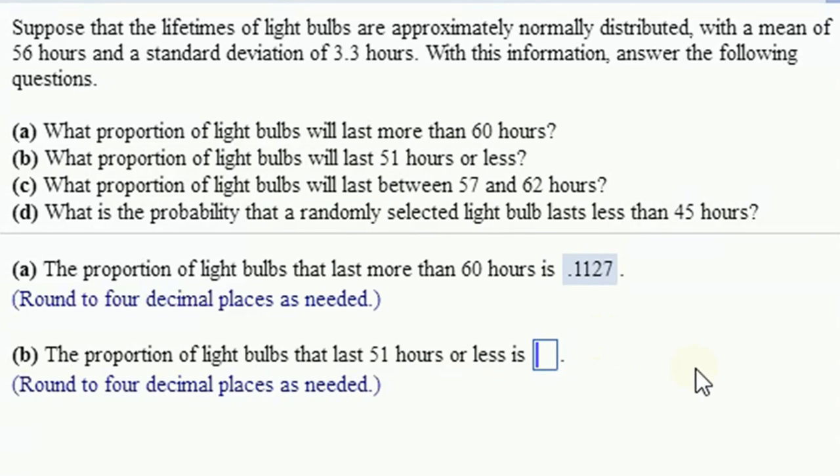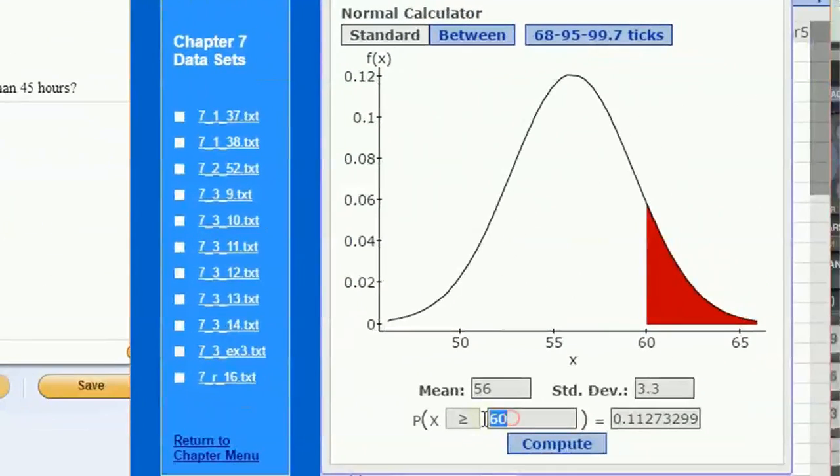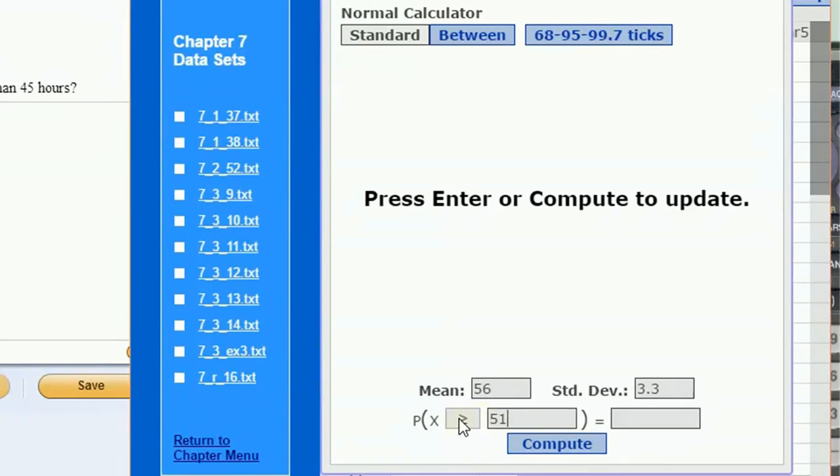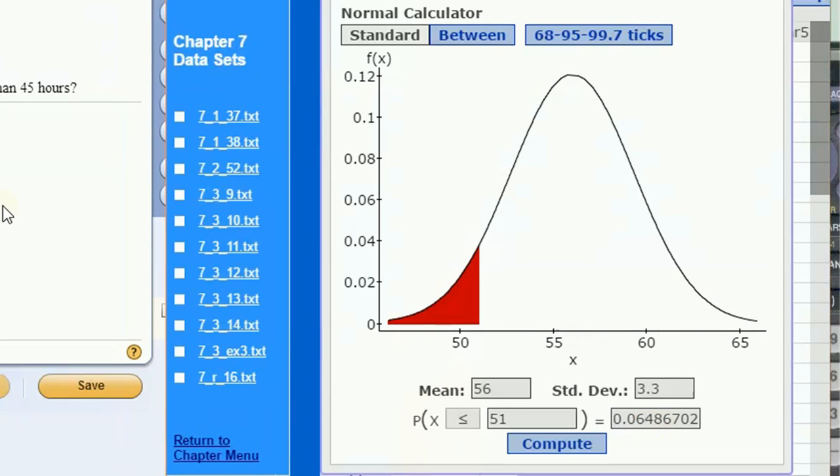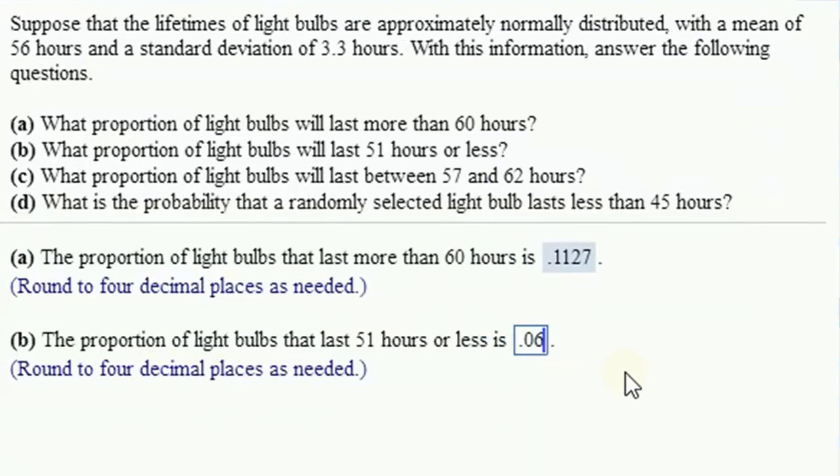What proportion of light bulbs last 51 hours or less? Change this value to 51, and we're looking 51 or less, we're going to have less than or equal to compute. Oh, we've got it right there already. I only want four decimal places, so I'm going to just type it in, 0.0649.